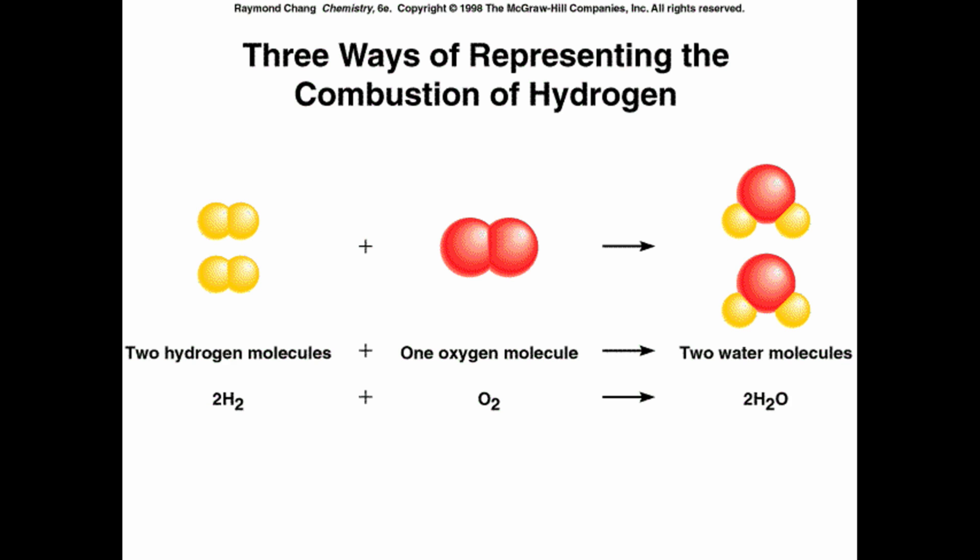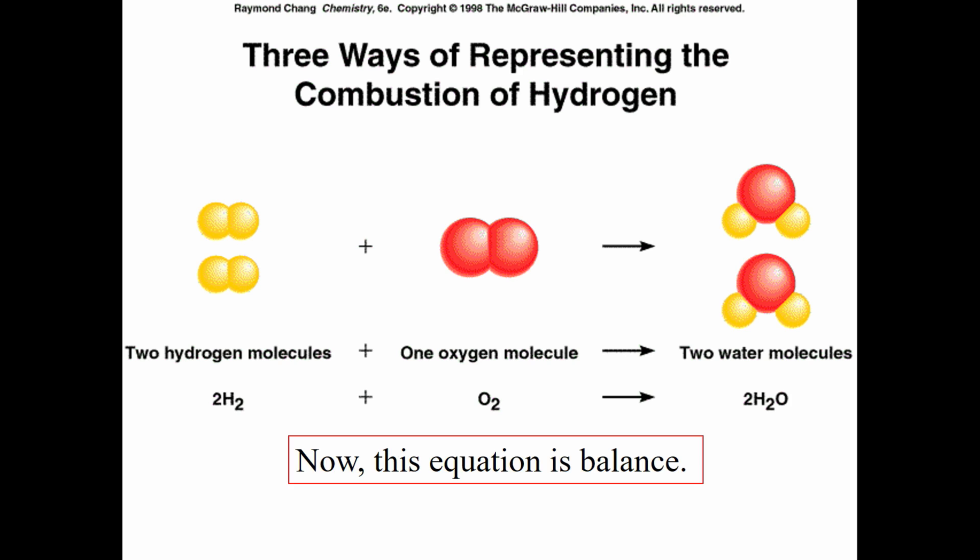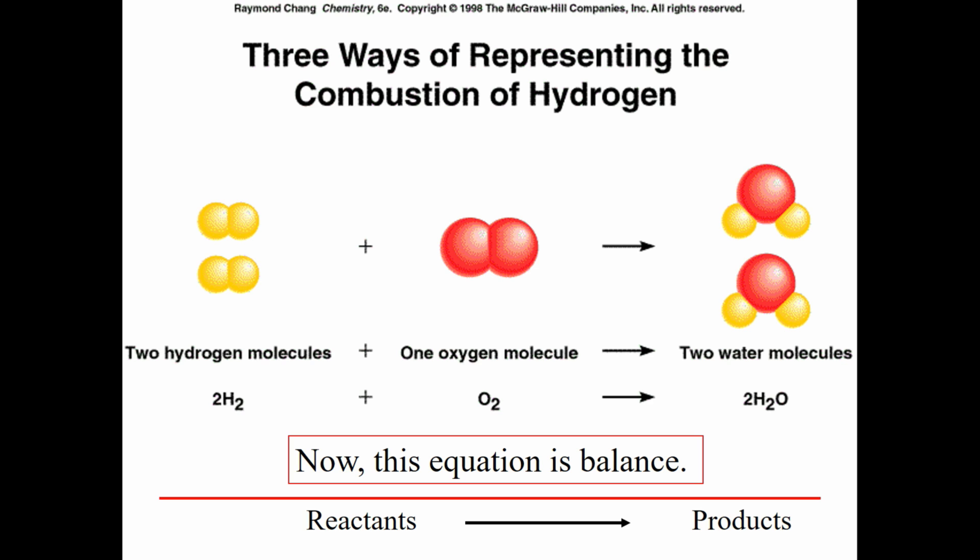Right now we're thinking about it in terms of molecules. Eventually we will scale up and think about these balanced equations in terms of moles, because a mole is nothing more than a number as well. So it is a nice balanced equation, and we're going to go through the process of how to balance them. The things on the left are called your reactants and the things on the right are the products — reactants are what you're starting with, and products are what are produced by the reaction.